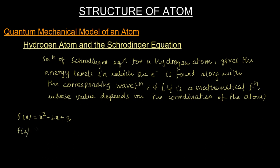If you put x as 2, it gives you the value as 3 (2² is 4 minus 4 plus 3 equals 3). If you put it as 3, the value is 6. Similarly, the wave function ψ depends on where the atom is at a given point of time.